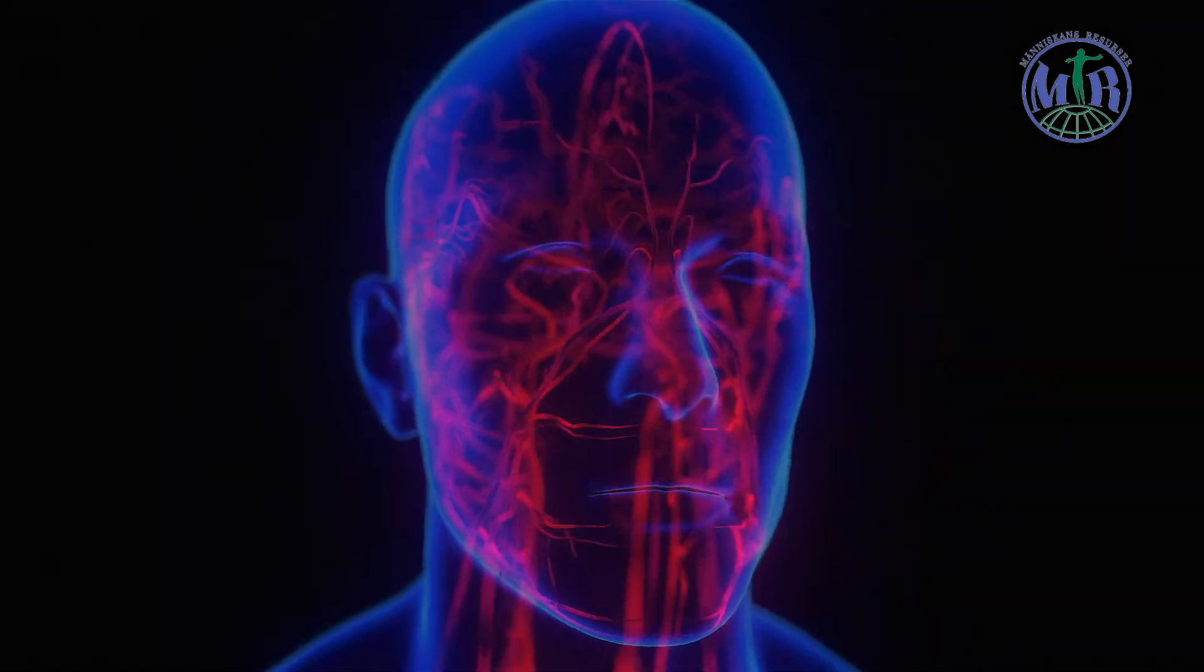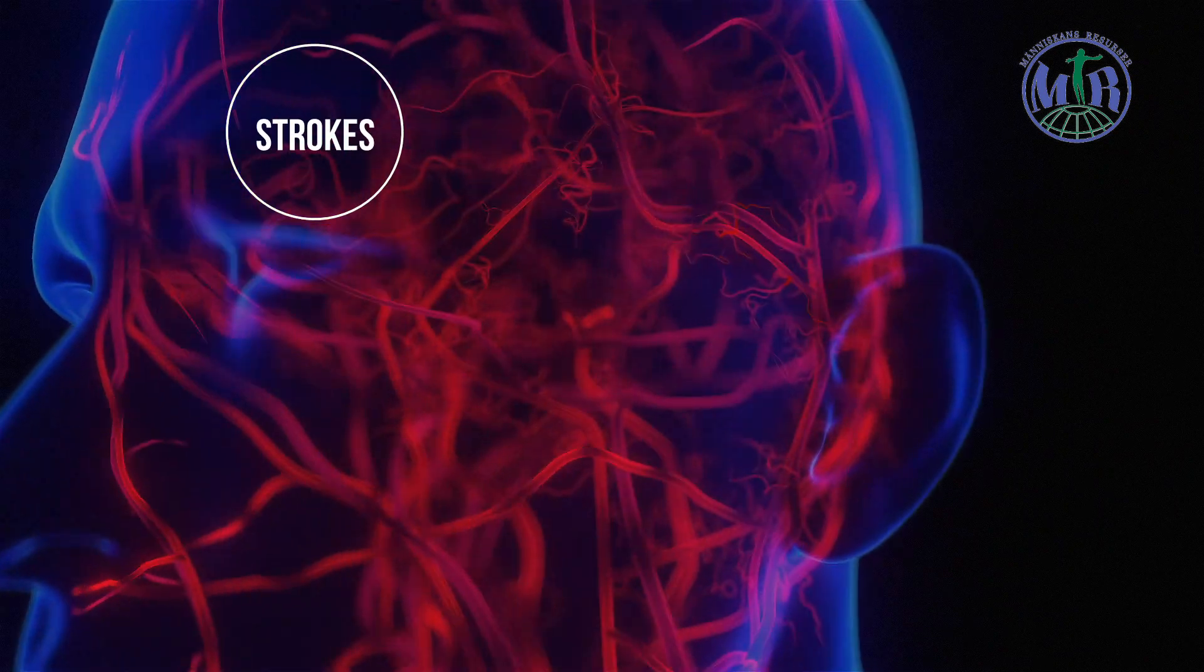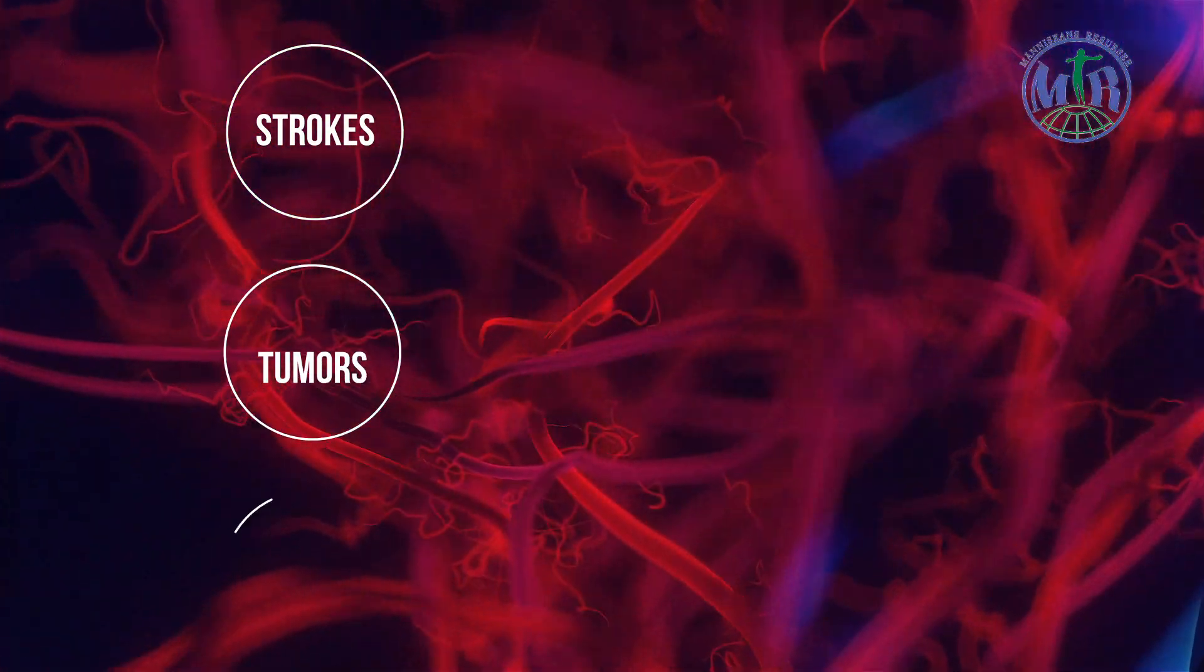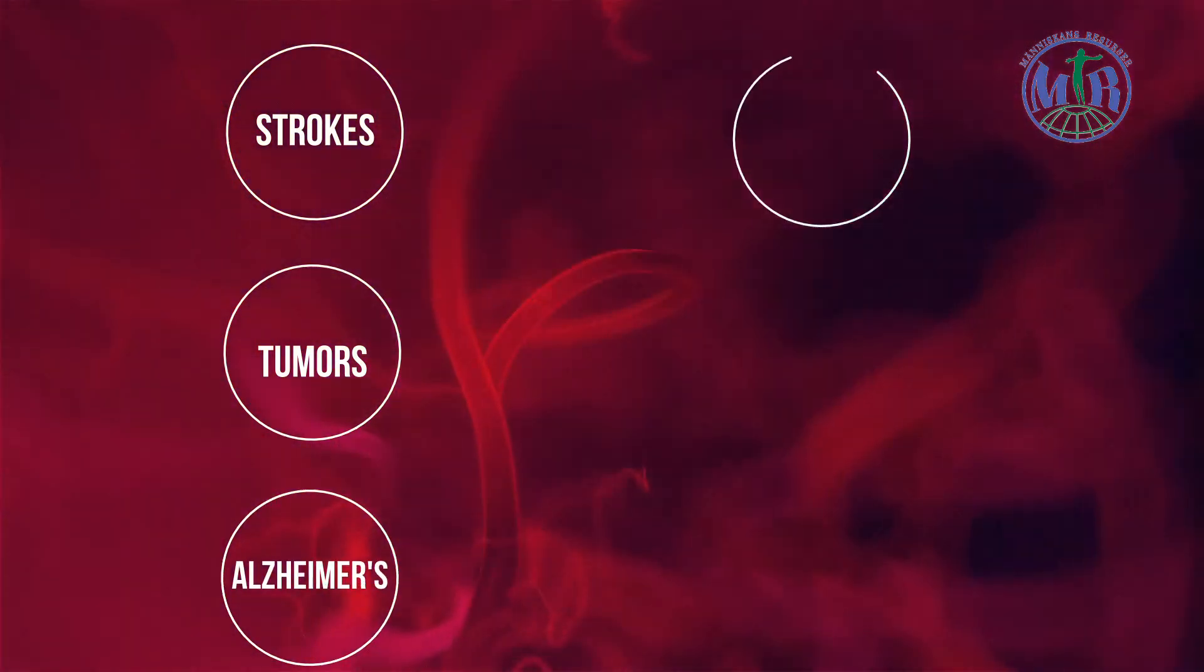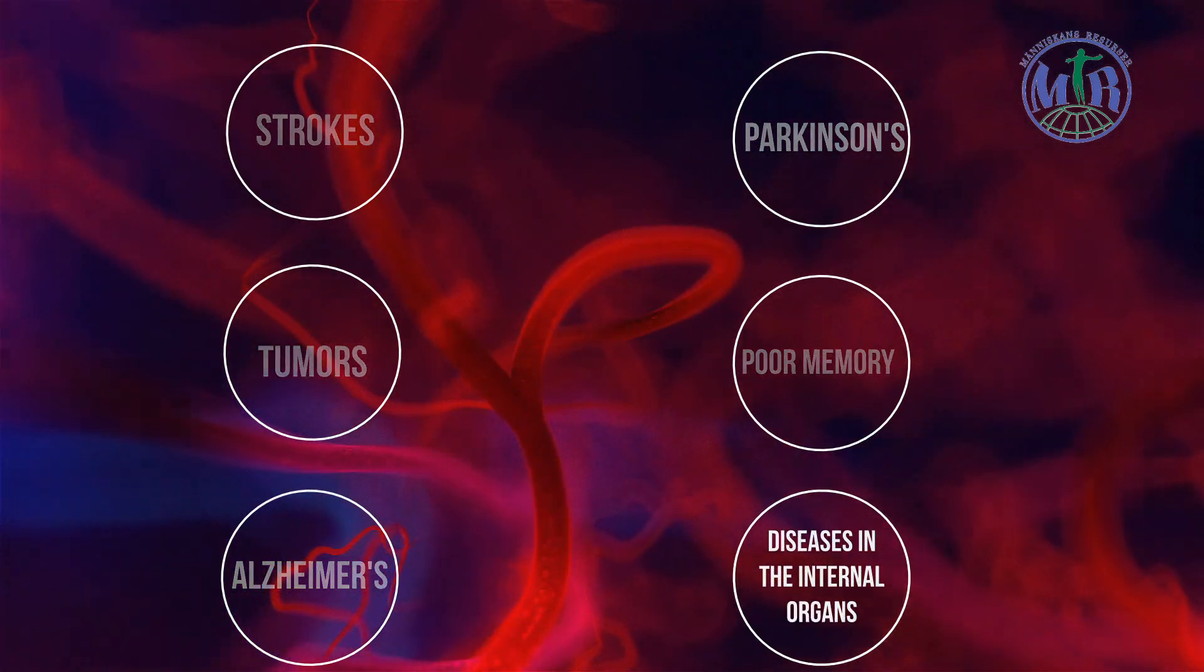It is well known that a poor blood supply and oxidative stress cause diseases such as strokes, tumors, Alzheimer's disease, Parkinson's disease, poor memory and, of course, diseases in the internal organs.